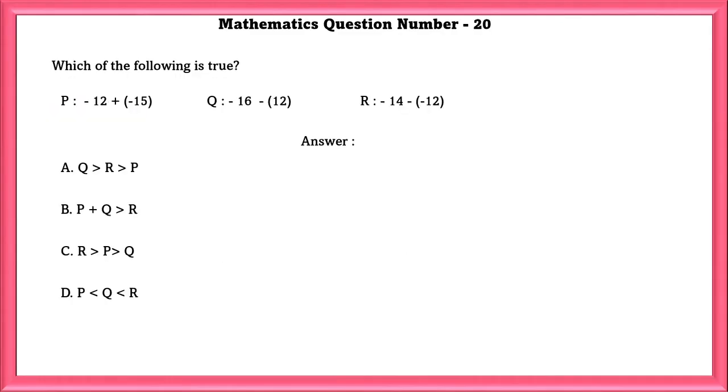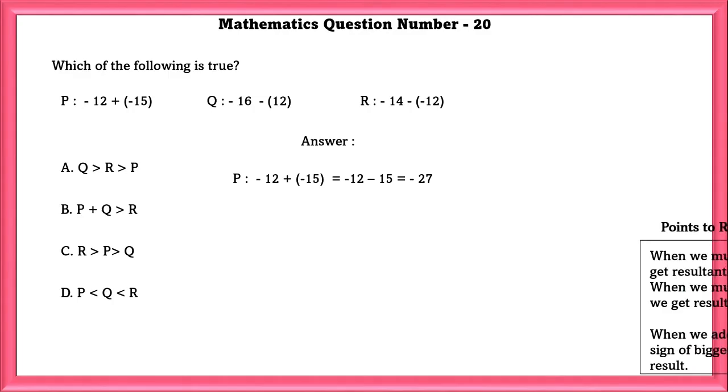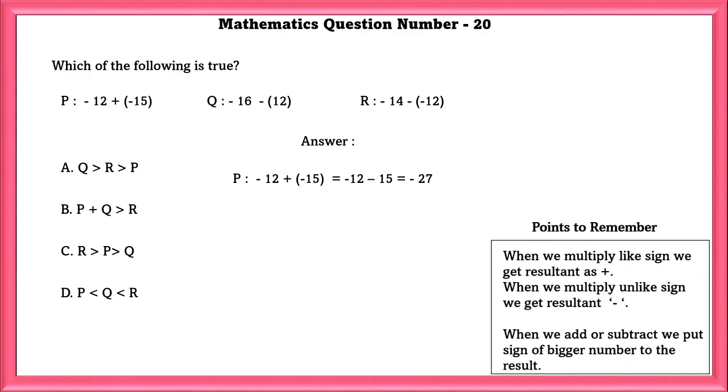Mathematics Question Number 20. Which of the following is true? Points to remember: When we multiply like signs we get resultant as plus. When we multiply unlike signs we get resultant as minus. When we add or subtract, we put sign of bigger number to the result. So P is equal to minus 27, Q is equal to minus 28, and R is equal to minus 2. So the correct option is C.